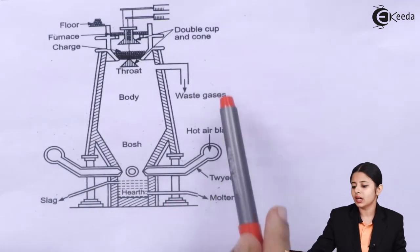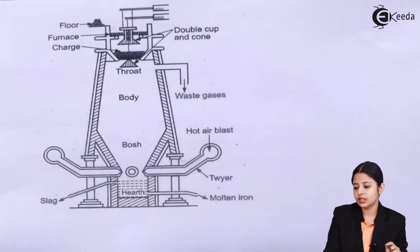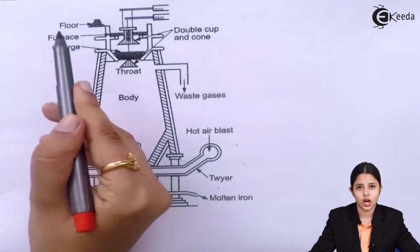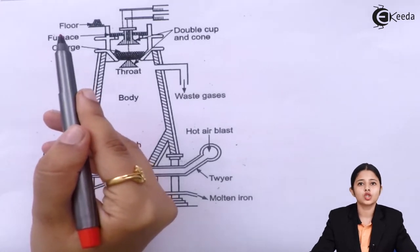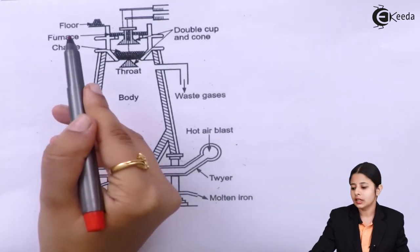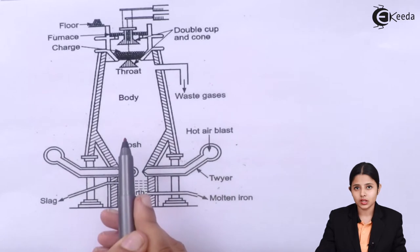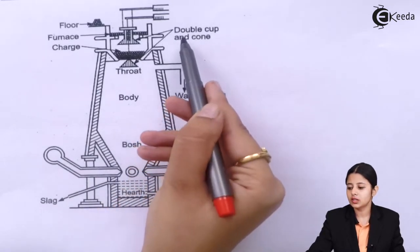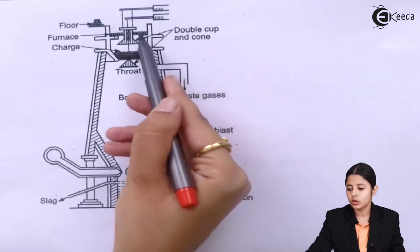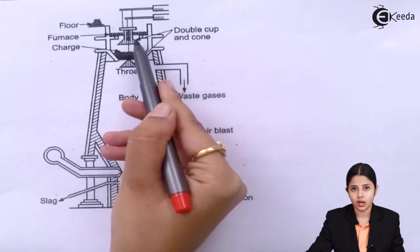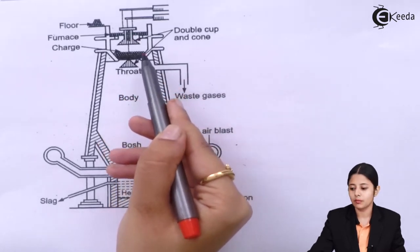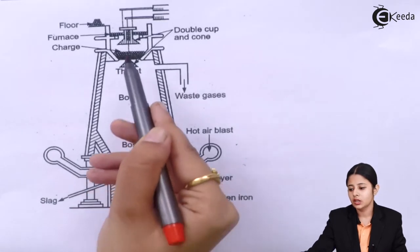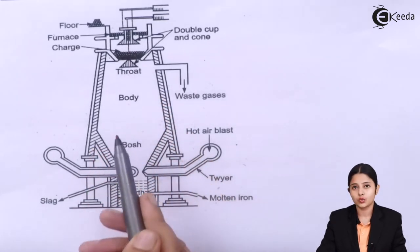Here is the diagram of the blast furnace. If we look over here, we have the charge — charge is the crushed ore. It goes into the blast furnace with the help of the cup and cone method. Here is the double cup and cone method: the cup is filled with the charge, which comes down to the cone, and once the cone is shifted, the entire charge comes down.